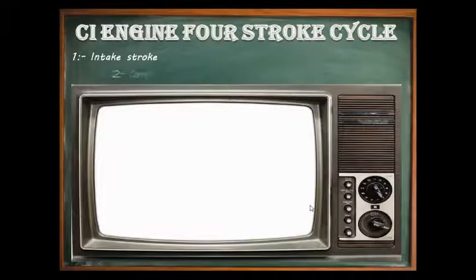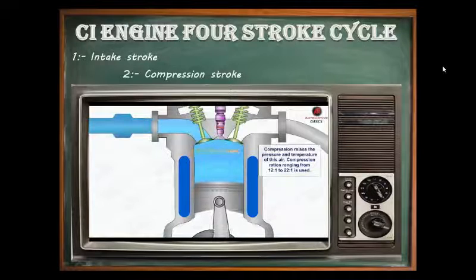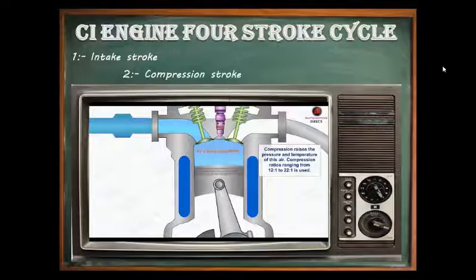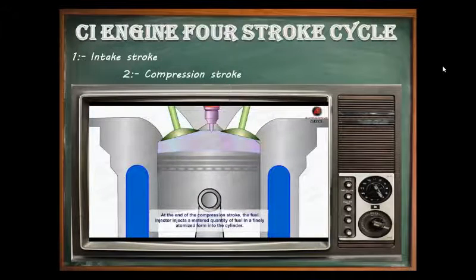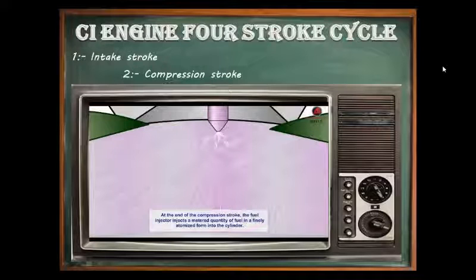The second stroke is the compression stroke. After the piston passes the bottom end of the cylinder, it starts moving up. Both valves are closed and the cylinder is sealed. The piston moves upward, compressing the air into a small space between the top of the piston and the cylinder head. The air is compressed to 1/22 or less of its original volume. Due to this compression, high pressure and temperature are generated inside the cylinder. At the end of the compression stroke, the piston is at the top end of the cylinder.